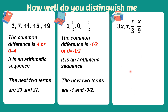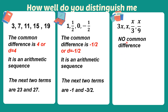Next, let's proceed to our third example. We have 3x, x, x over 3, and x over 9. Ito nga ba ay may common difference? Subtract natin: second term minus first term is x minus 3x, which is negative 2x. Then x over 3 minus x is equal to 2x over 3. Since these differences are not equal, it has no common difference. Ibig sabihin, ang sequence na to ay hindi arithmetic sequence.